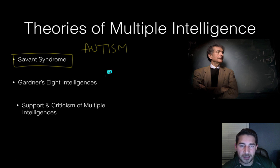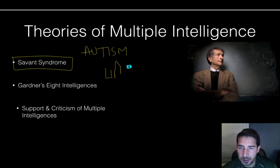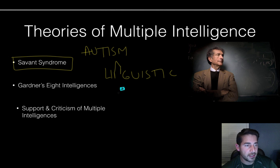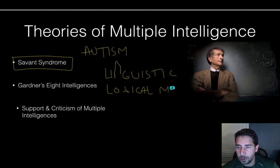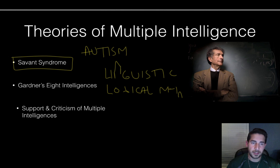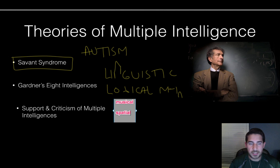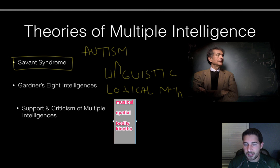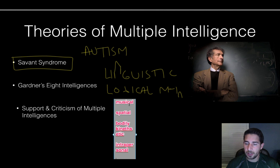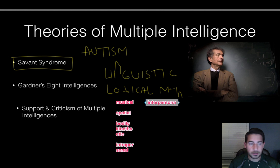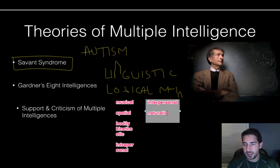Gardner's eight intelligences are: linguistic, logical-mathematical, musical, spatial, bodily-kinesthetic, intrapersonal — meaning within yourself — interpersonal — that's between two people — and naturalistic.